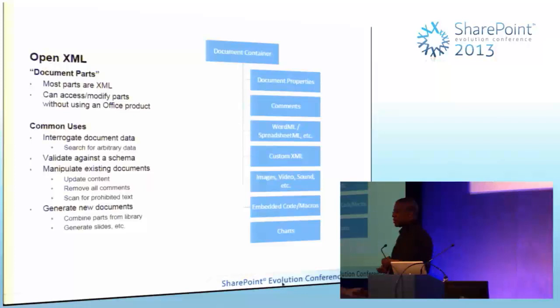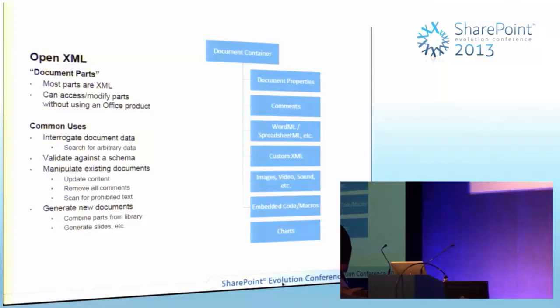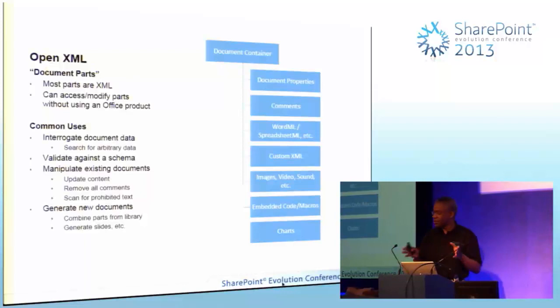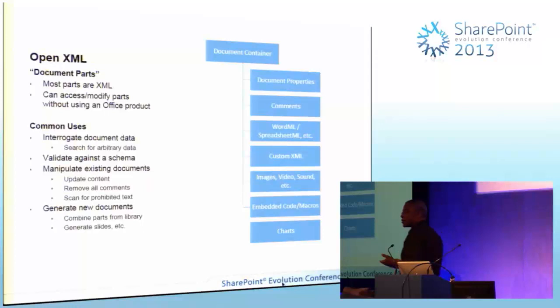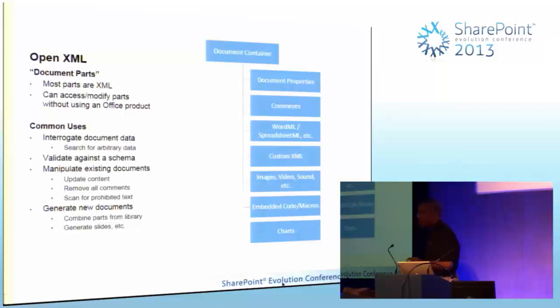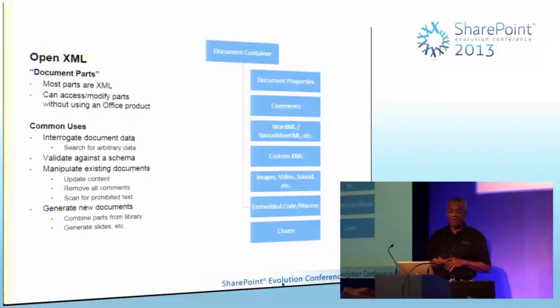Each component is driven by its own schema. Schemas are the way that these different types of components are identified within the package file. It's the actual schema URL itself that's being used to identify these components, which is convenient for the packaging API - it just uses the schema to validate the object and then loads the object. The basic structure of an OpenXML document follows this convention.